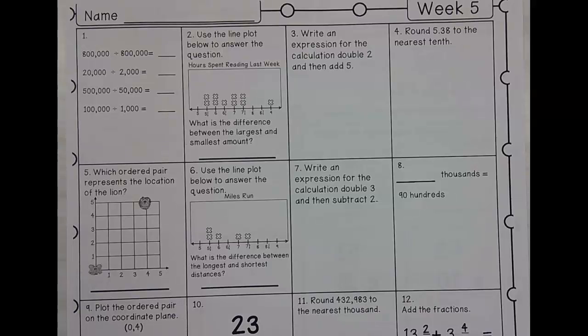The first question says 800,000 divided by 800,000. Well, 800,000 divided by 800,000 is? If you said one, you guessed right. Good job.